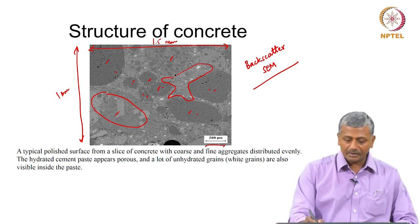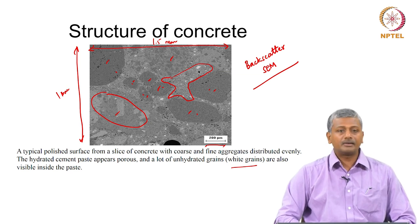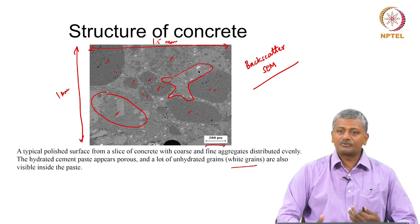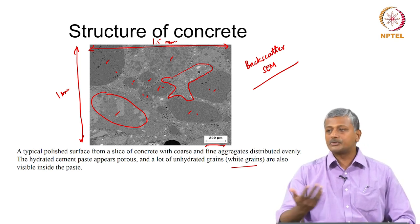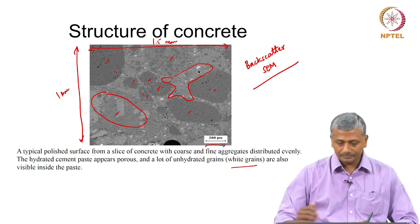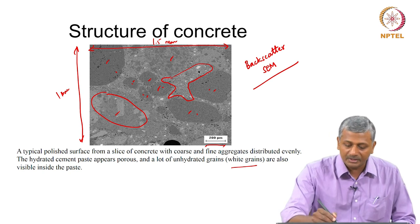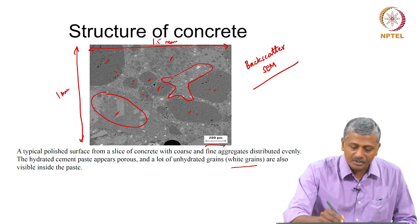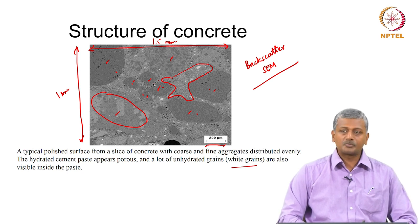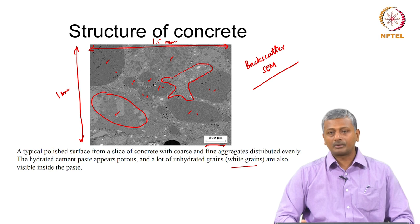The whitest particles are the unhydrated cement grains — grains that have not reacted with water. The different shades of grey represent cementitious compounds or hydrated products forming from the reaction of cement with water. You can also see black spots within the paste.